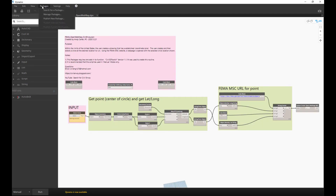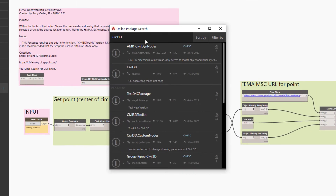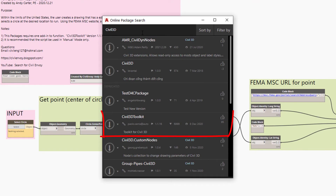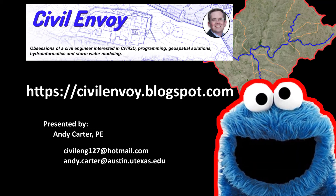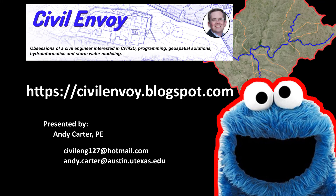Note that under the hood, these scripts require the installation of Autodesk's Civil 3D Toolkit for Dynamo prior to use. To download and try these tools, please visit the link also provided in the comments below. Again, I'm Andy Carter, the self-proclaimed Civil Envoy. I'll bet with these tools, you'll be a hydrologic and hydraulic designing monster. I appreciate your time.